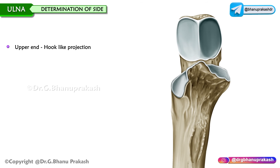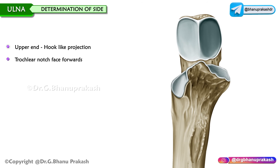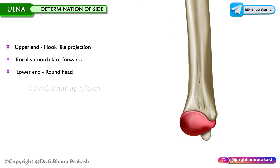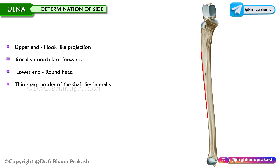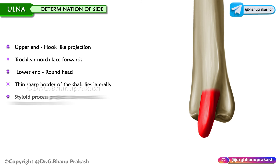Determination of the side. The upper end is strong with a hook-like projection, and the concavity of the trochlear notch faces forwards. The lower end is smaller with a round head. The thin, sharp border of the shaft lies laterally, and the styloid process projects downwards and faces posteromedially.